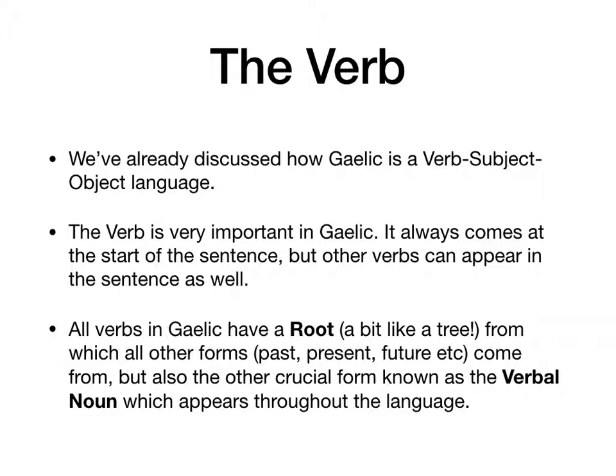But as we've seen in Gaelic, other verbs can appear in the sentence as well. For example, 'I am living in Glasgow' — so we have two verbs in that sentence. But all verbs in Gaelic have a root, a bit like a tree, from which all forms — the past, the present, the future — come from. And also the other crucial form known as the verbal noun, which appears throughout the language. We'll explain that seemingly contradictory term as we go forward.